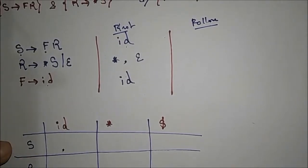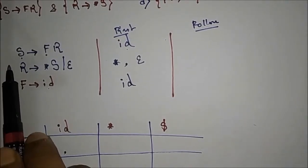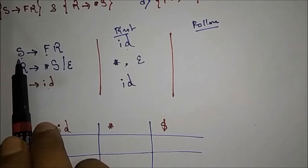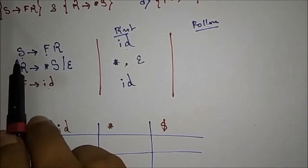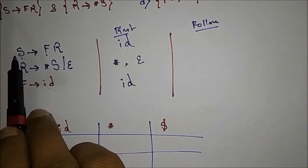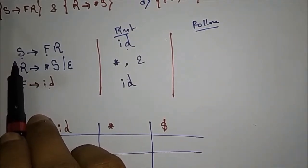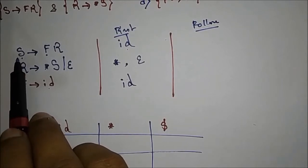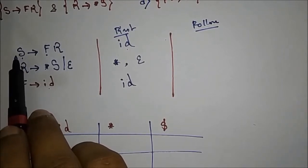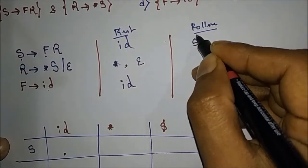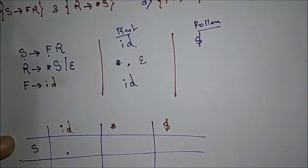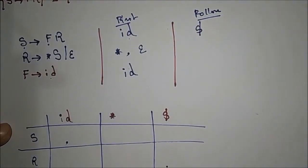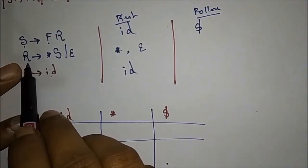Now we will find the FOLLOW sets. As you will see from the previous video, the start symbol will always follow dollar. S is the start symbol in this grammar, so FOLLOW(S) = {$}. Now what will be FOLLOW(R)?